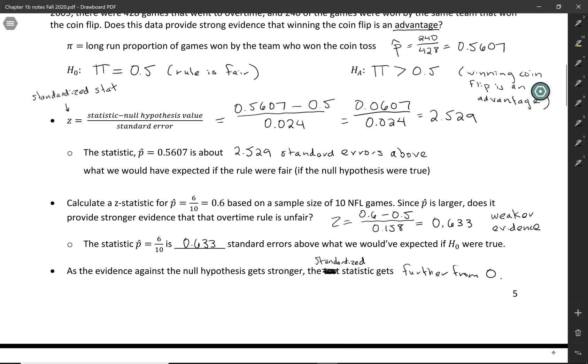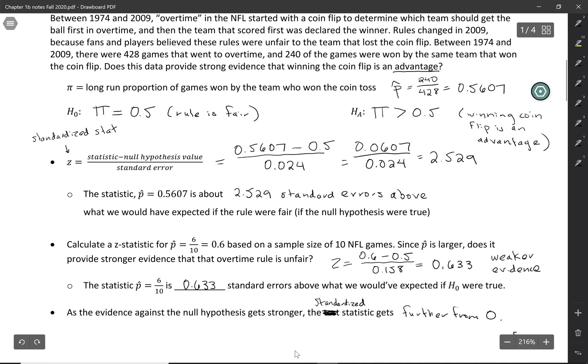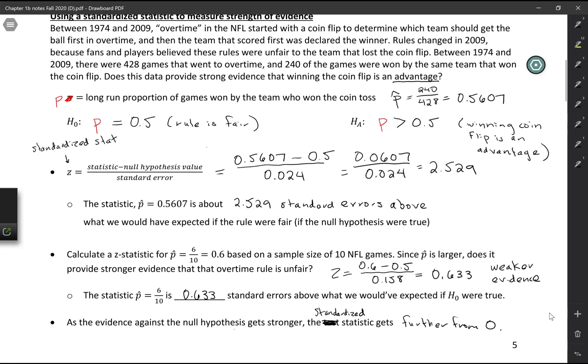In this case where we had a z-statistic of 2.529, this provides strong evidence against the null, so this gives us strong evidence that the overtime rule the NFL was using actually did provide an advantage to the team who won the coin flip. It's good that they stopped using that. Real quick, make sure you're using the correct symbols in your notes—make sure you have a π to represent the population parameter.